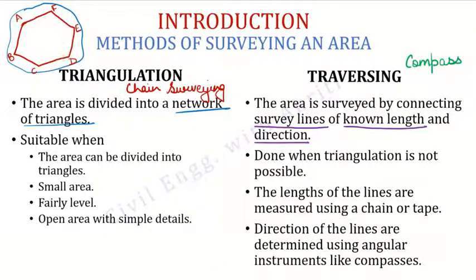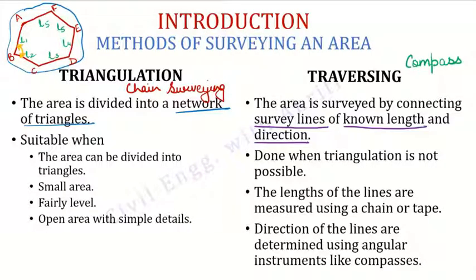These lines have lengths L1, L2, L3, and so on. If you don't know the lengths, we will measure them. When we use the traversing method, there is another important thing — the angle between the lines. These lines make angles with each other. We should know there is another thing: traversing is done when triangulation is not possible — for example, when the area has a lot of construction or dense forest — so we prefer traversing. The lengths of the lines are measured using a chain or a tape.